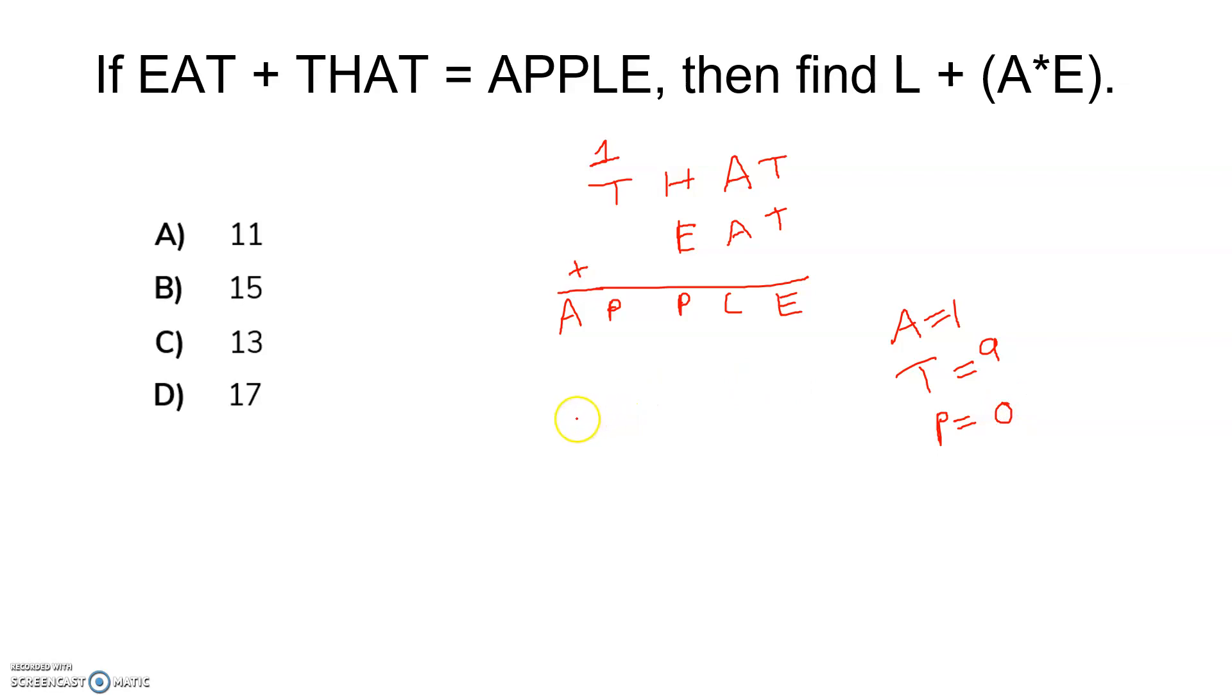Now substitute that. So basically 9, E, A, T and here goes E, and here 1, and here 9 because T is nine. Here T is nine, right? So basically here also it will be nine.